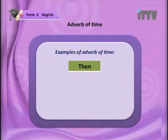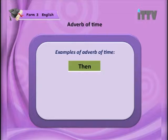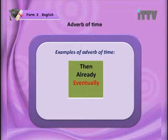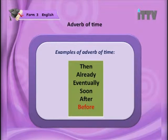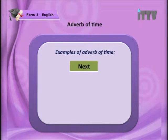Now we are going to look at words that indicate they are adverbs of time — that's when you ask the question word 'when.' Examples of adverbs of time: 'then' — look at the spelling, t-h-e-n. Students, be very careful, it's not t-h-a-n; if you use t-h-a-n it becomes a comparison. This adverb of time is t-h-e-n. Other examples: 'already,' 'eventually,' 'soon.'